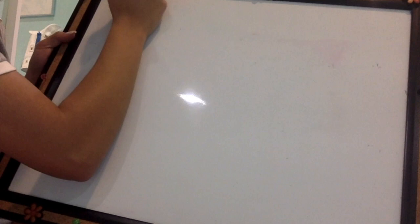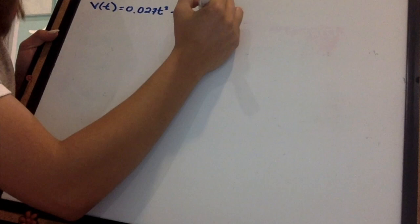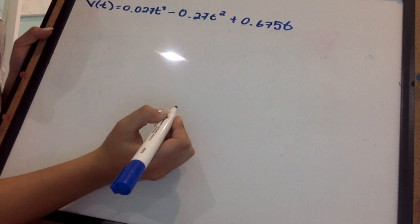Here is a visual of me completing the question of the steps that was given before from start to finish. So, as you can see first here, I am just writing out my current equation of 0.027t to the 3 minus 0.27 to the 2 plus 0.675t.